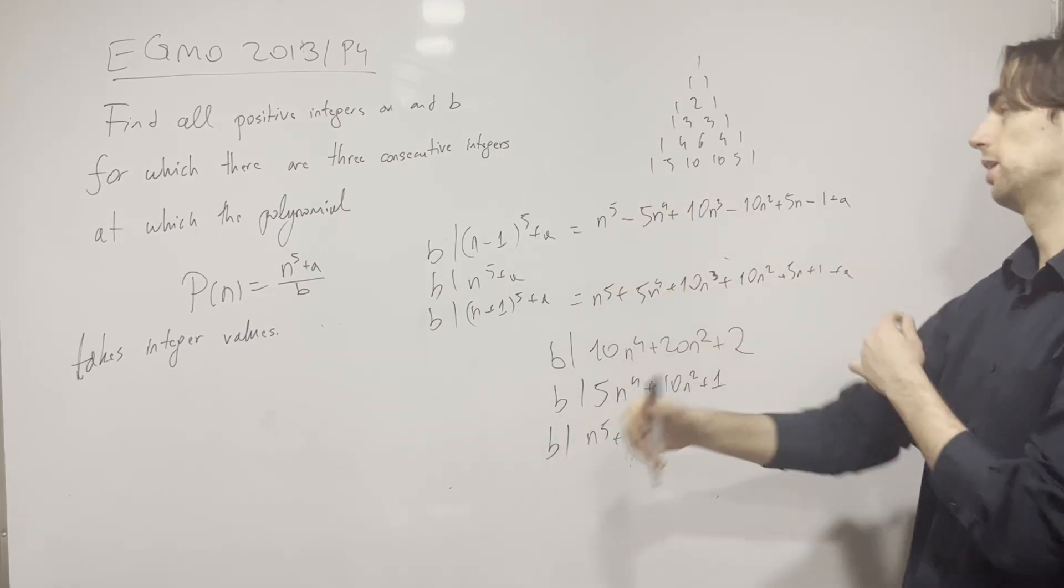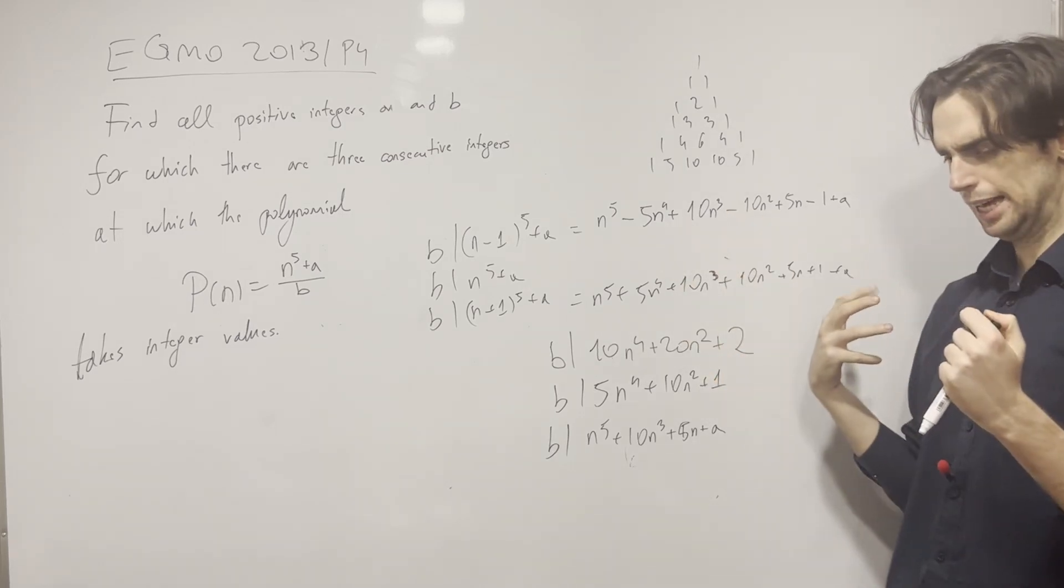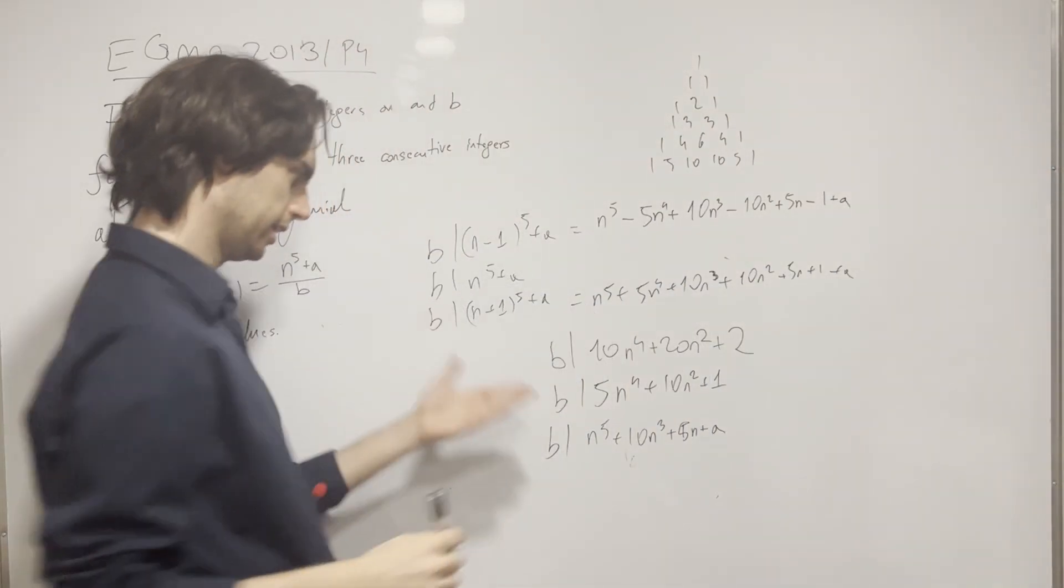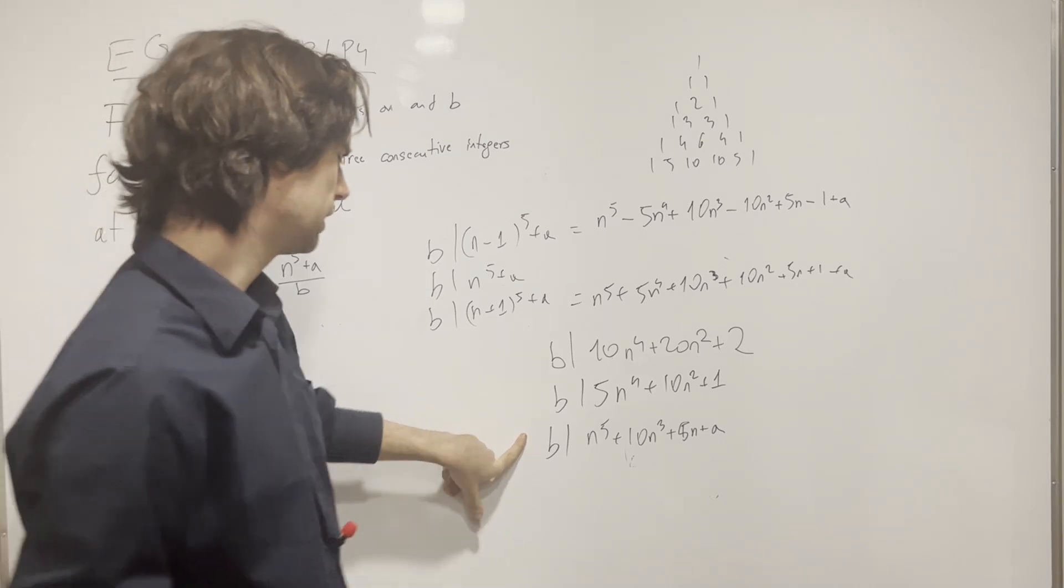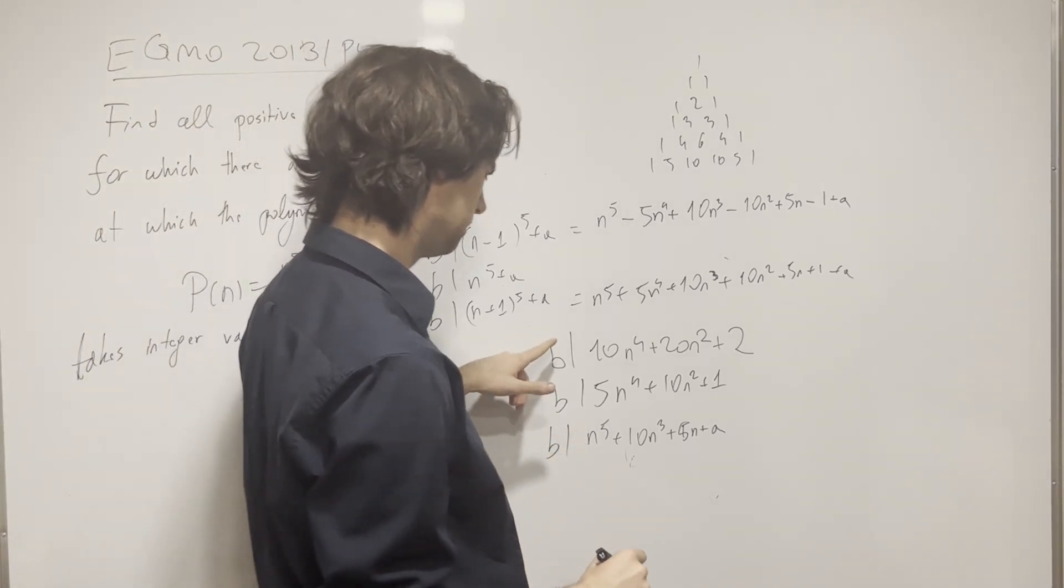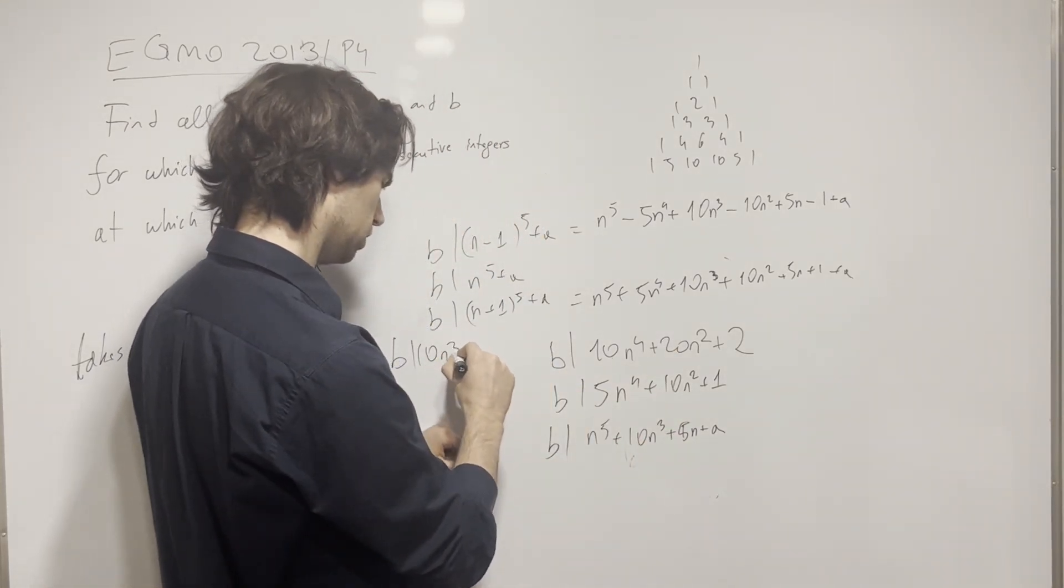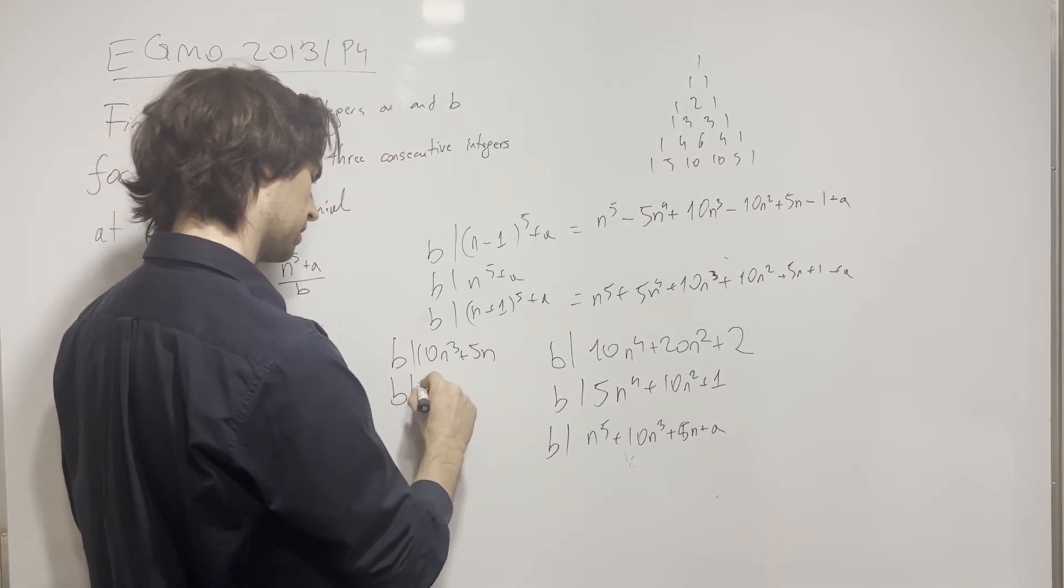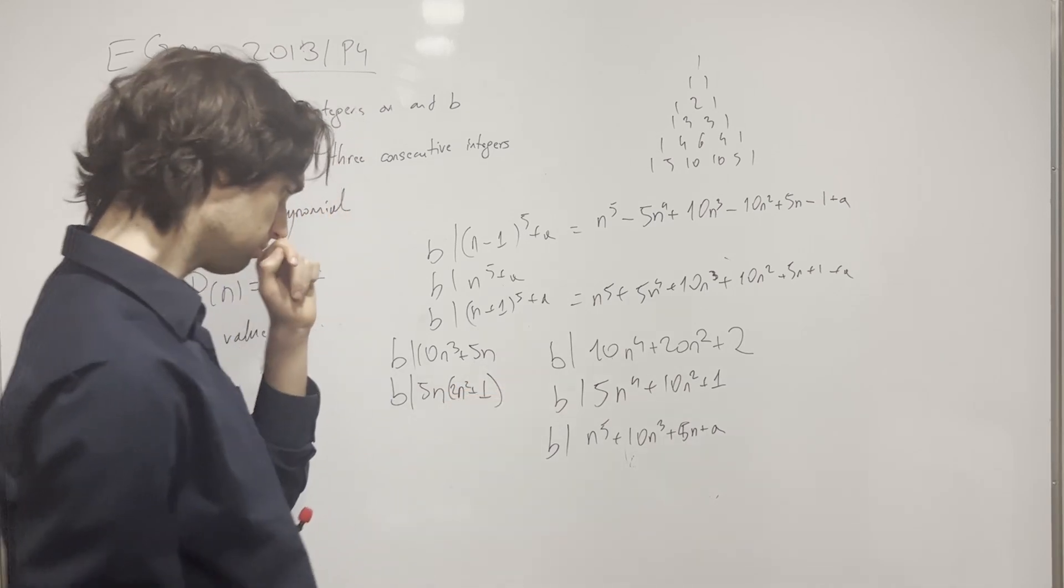So I'll have n^5 + 10n^3 + 5n + a. Now I can subtract this to get rid of the n^5. So what I'm trying to do at every single turn is get rid of more of these, have less things of different powers. So what happens when we subtract this from this? We get that b divides 10n^3 + 5n. So now this is b divides 5n times (2n^2 + 1).